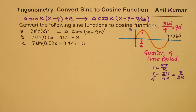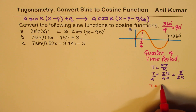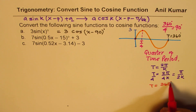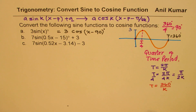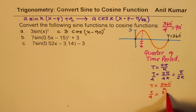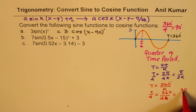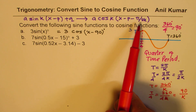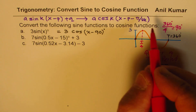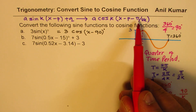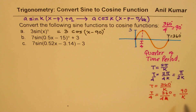If writing this equation in degrees, the time period is going to be 360 degrees divided by k, and then the quarter of the cycle will be 360 degrees divided by 4k, which is 90/k. So if writing in degrees, I will replace π/(2k) with 90/k. So that is very important to understand.